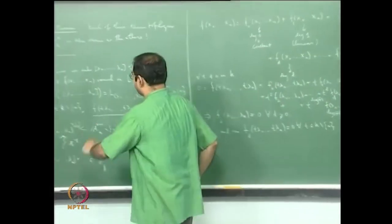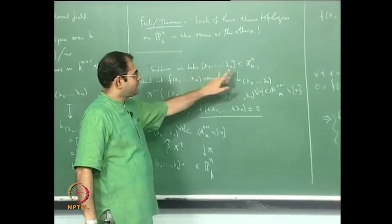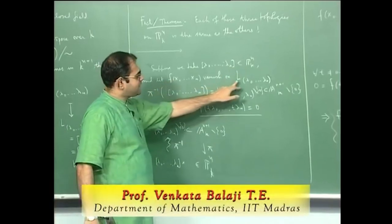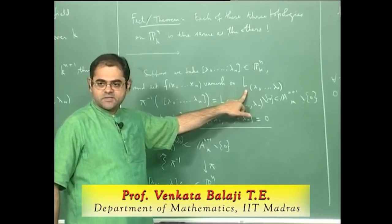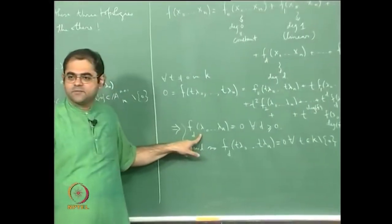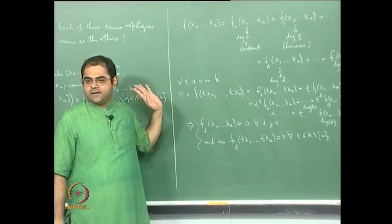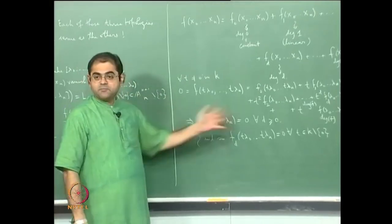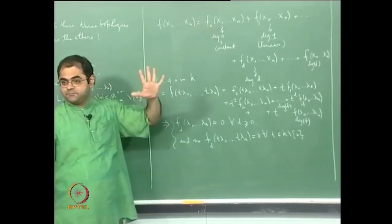Let us recall that if you take a point in n-dimensional projective space and take a polynomial vanishing on the line above that point in the n+1 dimensional affine space, then every homogeneous component of that polynomial will also vanish on that line. In particular, that polynomial will not have any constant term, so it will be a sum of homogeneous components with no degree-0 component.